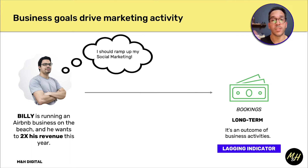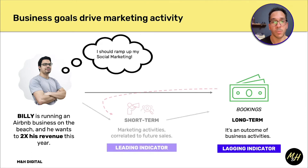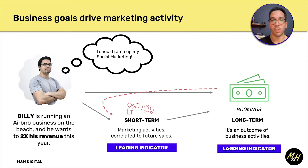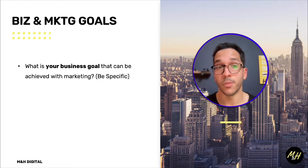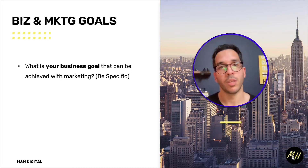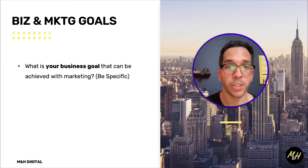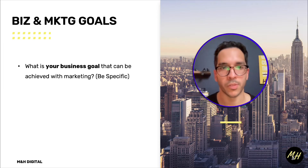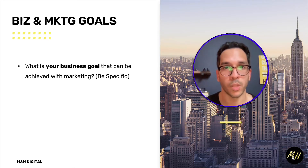Booked nights are what we call a lagging indicator — an outcome you see later as a consequence of business activities. In the short term, the way you get bookings is through marketing activities, which we call leading indicators. These are important because you can track them in real-time day-to-day. You may not get bookings every single day, but marketing activities you're doing are indicative of future sales. Your business goal must be one that can be solved with marketing — like growing revenue, profitability, or entering new markets — and it needs to be specific and realistic.